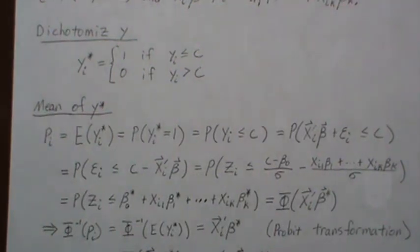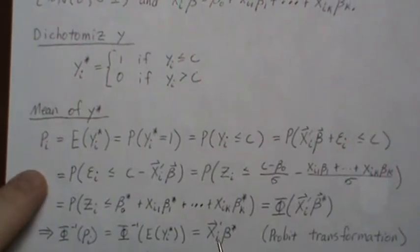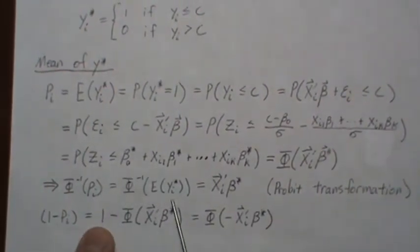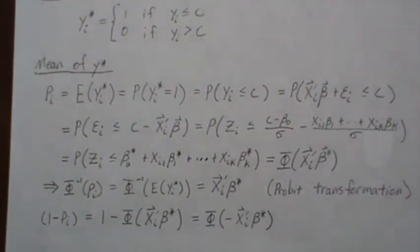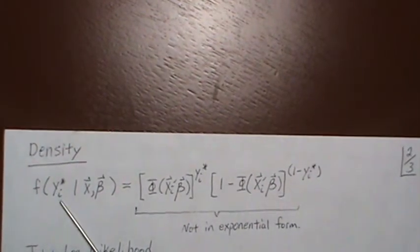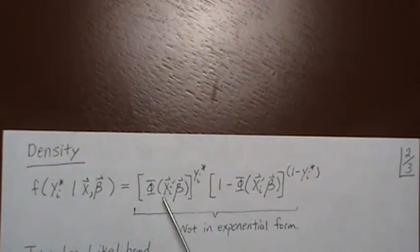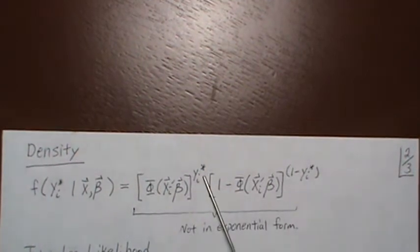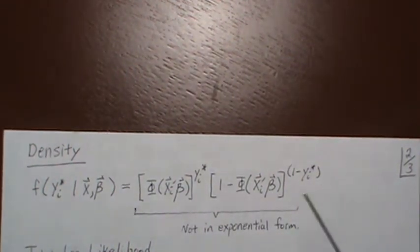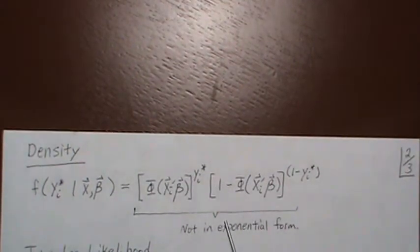If we take the inverse of this CDF to both sides, we get this linear combination. This is called a probit transformation. It's the inverse CDF of the standard normal. Probit, I think, is an acronym for probability unit. This is really probit regression. We can also show that 1 minus π equals this, since the density for the standard normal is symmetric. Now, let's look at the density for Y_i. This is a 0, 1 random variable, so it's a Bernoulli distribution. Note this is not in exponential form, but we could put it in exponential form.